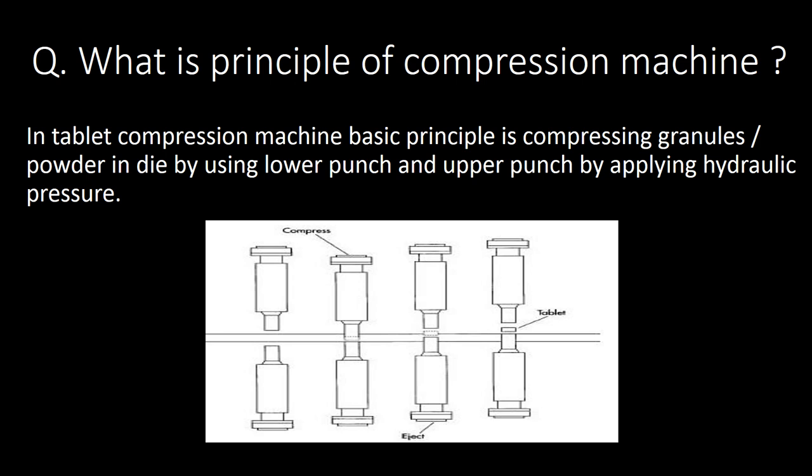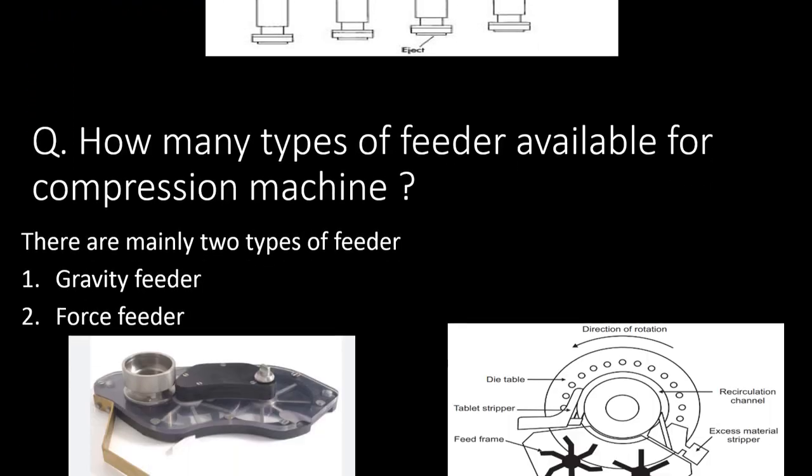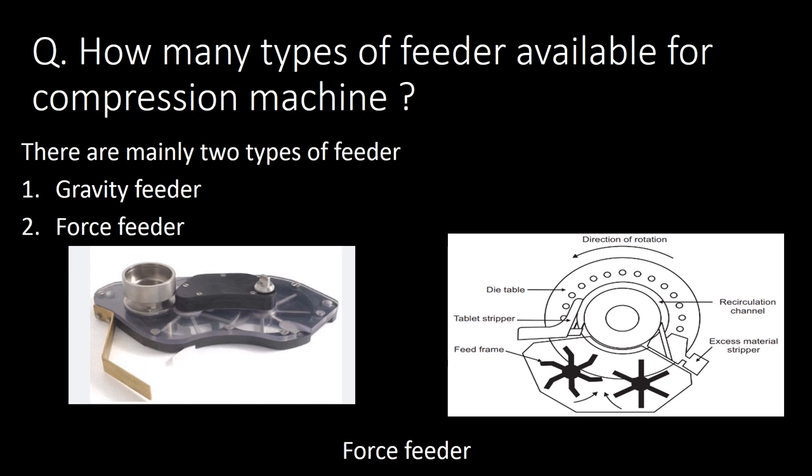What is the principle of a compression machine? In a tablet compression machine, the basic principle is compressing granules or powders in a die by lower punch and upper punch by applying hydraulic pressure. You can refer to the schematic below for better understanding.